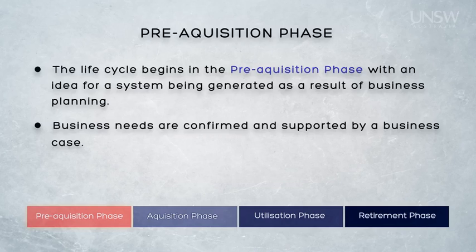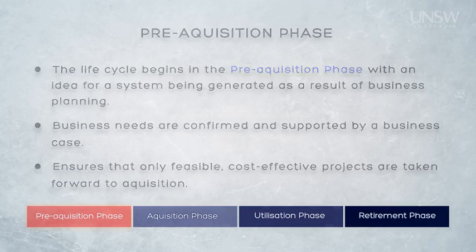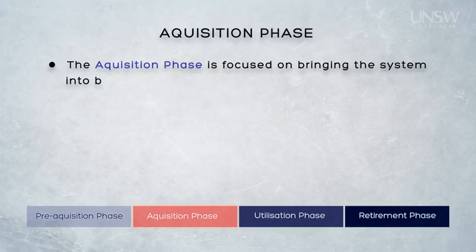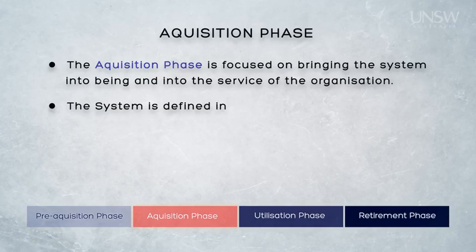In that sense, the pre-acquisition phase is where the organisation spends research and development funds to ensure that only feasible, cost-effective projects are taken forward to acquisition. Once the business needs for the system can be justified, they provide the input to the acquisition phase, which is focused on bringing the system into being and into service in the organisation. This would normally involve defining the system in terms of three major artefacts, which we'll describe shortly.